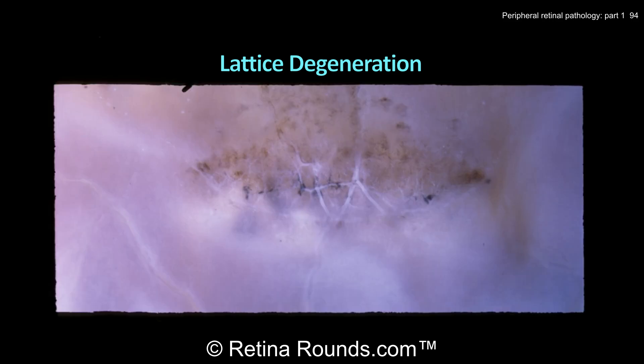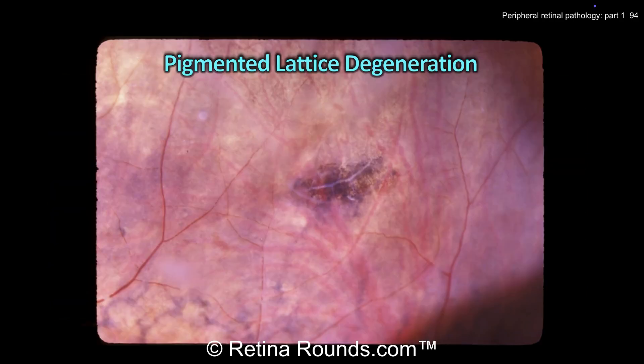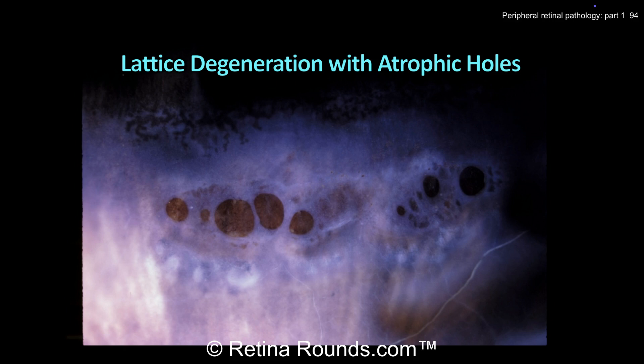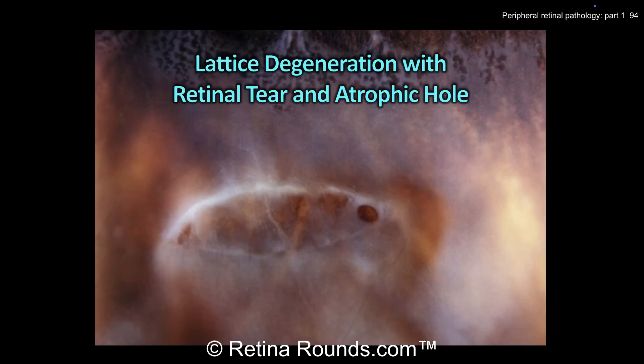Lattice degeneration can have associated sclerotic-appearing vessels, as demonstrated here. Hyperpigmentation, either at the borders or even within the area of lattice, may also be present. Sometimes the areas of retinal thinning can progress, resulting in atrophic holes. Here, two smaller areas of lattice degeneration have associated small atrophic retinal holes, and sometimes numerous atrophic holes may be present. This picture shows an area of lattice degeneration with a small retinal tear to the left of the image and an atrophic hole to the right.